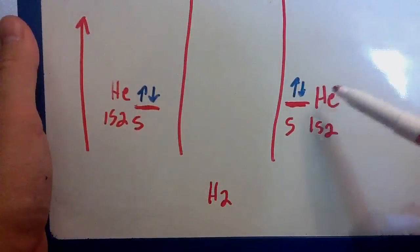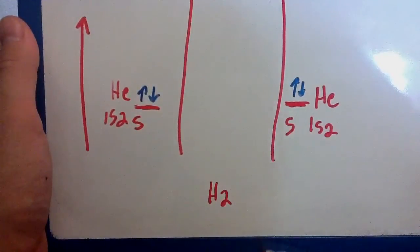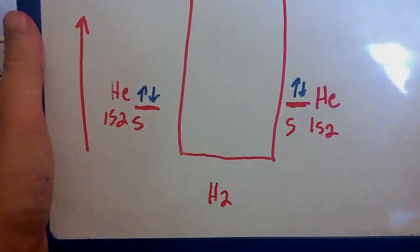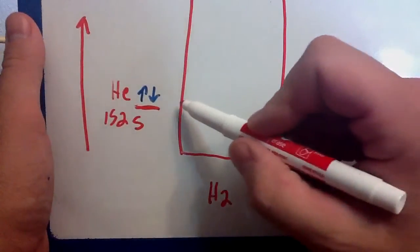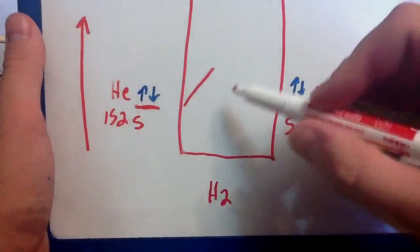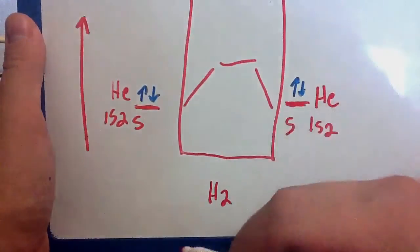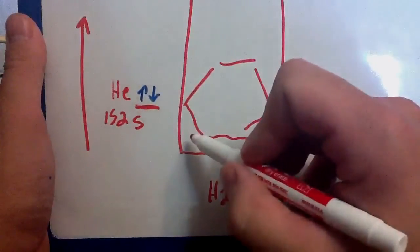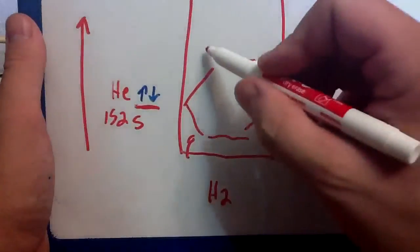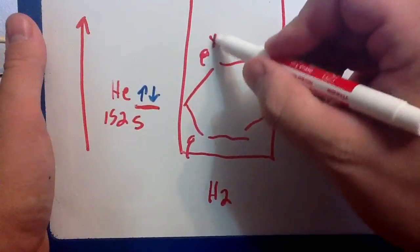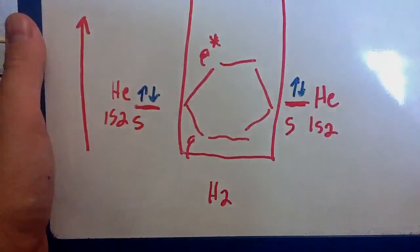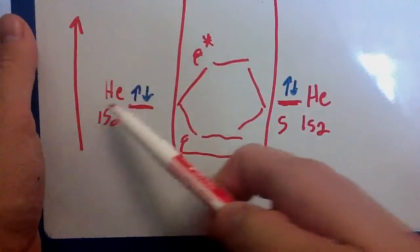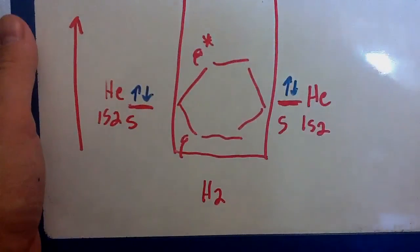So when I bring these two atoms together to make a diatomic molecule of helium, we're going to have two different orbitals. We're going to have an orbital of high energy here — our anti-bonding orbital — and an orbital of low energy here — our bonding orbital. This is going to be sigma, and that will be my sigma star, my anti-bonding orbital. So I've got one, two, three, four electrons that I need to account for.